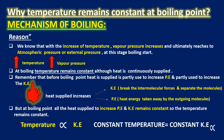Remember that before boiling, the heat supplied is partially used to increase the potential energy and partially used to increase the kinetic energy. With the increase of kinetic energy of the molecules, the intermolecular force of attraction between the molecules decreases. The heat energy supplied is partially used to break the intermolecular forces and separate the molecules, whereas heat energy is also partially taken away by the outgoing molecules. But at boiling point, all the heat supplied is used to increase the potential energy, and the kinetic energy remains constant. So the temperature remains constant at the boiling point.